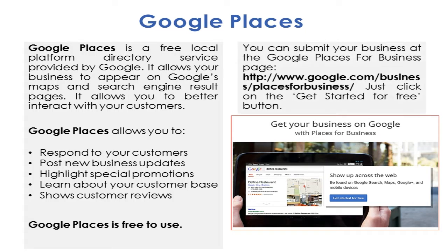You can submit your business at the Google Places for Business page, which is located at google.com/business/places-for-business. Just click on the 'Get Started for Free' button. I'm providing a PDF document you can download that is going to have all of these special URLs, so you don't have to copy them down in this presentation — they'll be available to you in clickable form in the PDF document just to the right of this lecture.